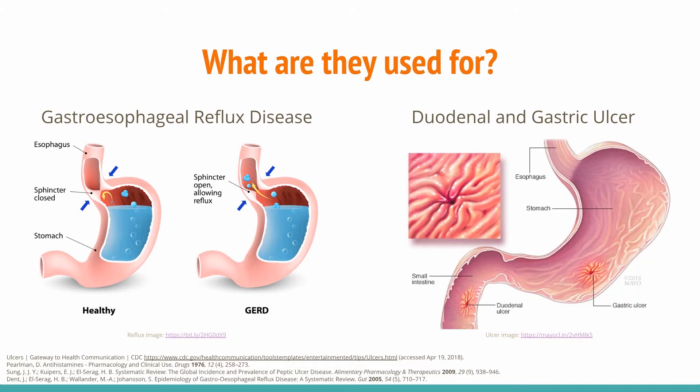Gastric ulcer disease is a condition that occurs when stomach acid reacts with the lining of the stomach to the point that results in sores or even holes. The only difference between duodenal ulcers and gastric ulcers is the location of the ulcer. Symptoms can range from stomach pains and nausea to internal bleeding. A review published in 2009 found that 17 out of 100,000 Americans were hospitalized with PUD, compared to only 7 out of 100,000 in Finland and 3 out of 100,000 in the Netherlands.